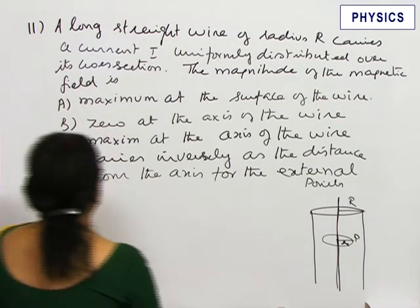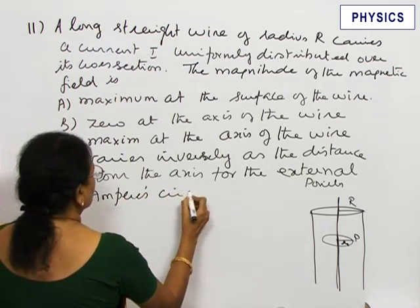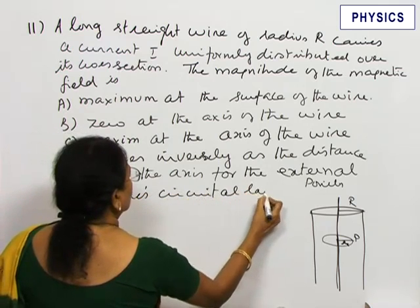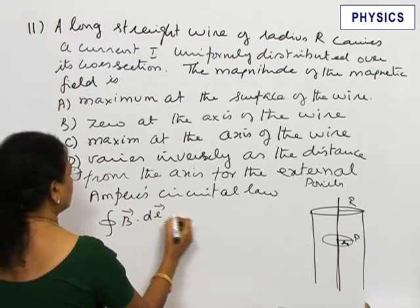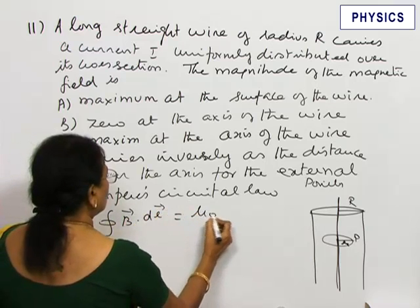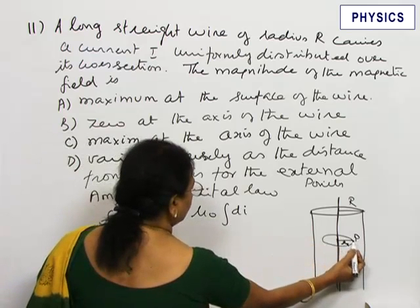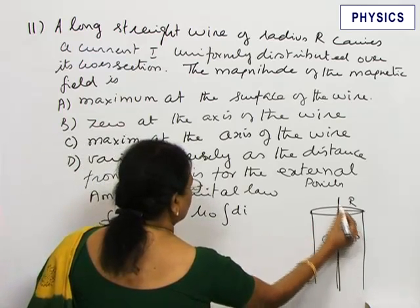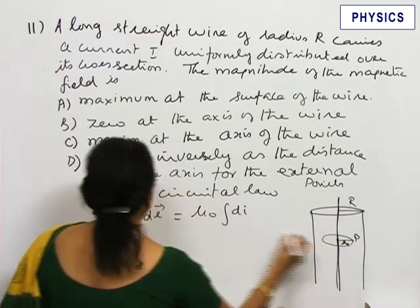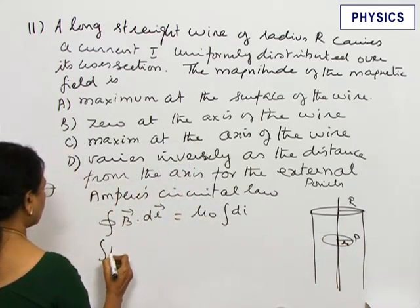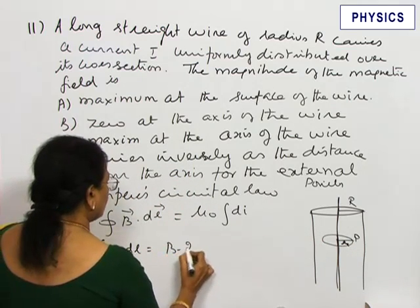We are going to use Ampere Circuital Law for solving this. Ampere Circuital Law states that the line integral B dot DL over a closed curve equal to mu 0 times the total current threading. You want to find at the point P, the distance of the point P from the axis of the wire is R. Imagine the closed curve in the form of a circle, then this becomes integral B dot DL becomes B into 2 pi R.